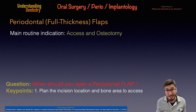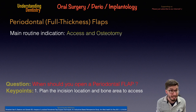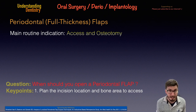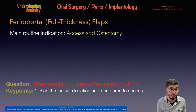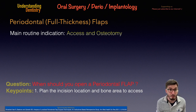The main reason why you want to open a periodontal full-thickness flap is to provide access to a bone area or a periodontal pocket, and in most cases you are also going to perform an osteotomy.